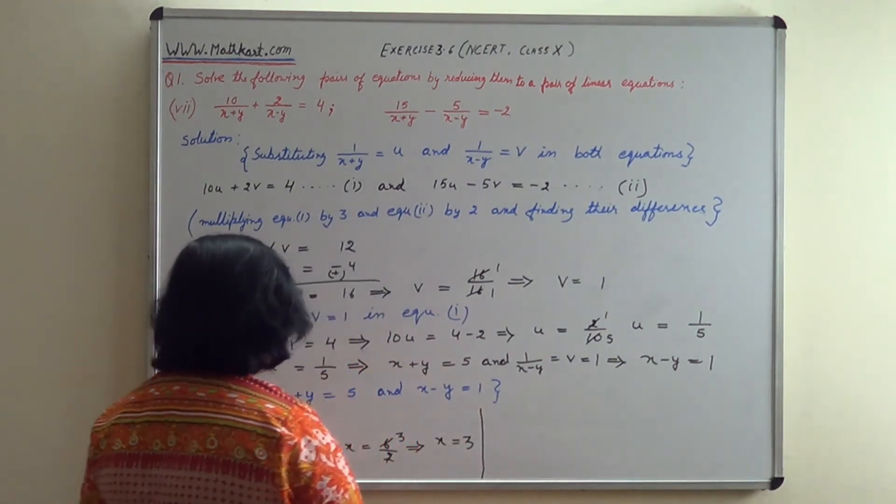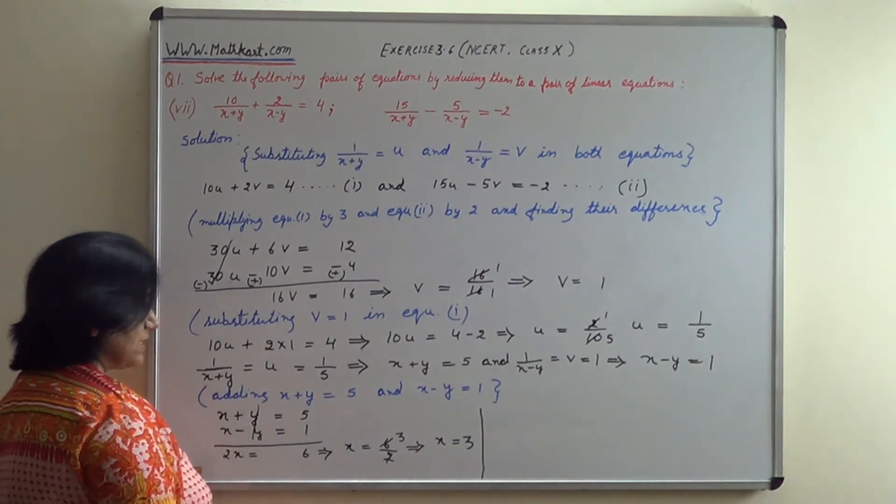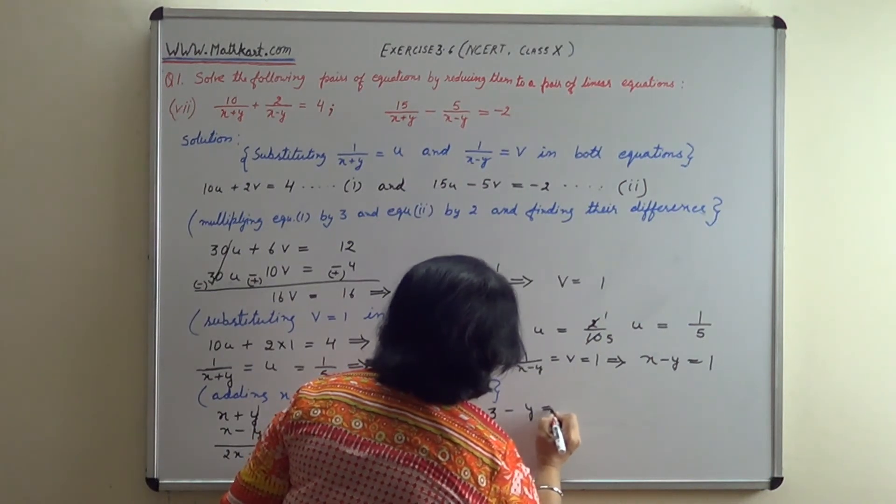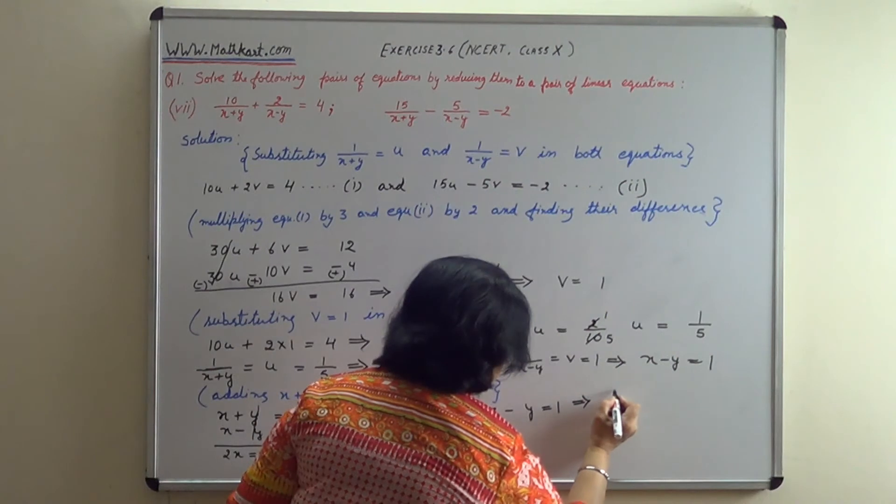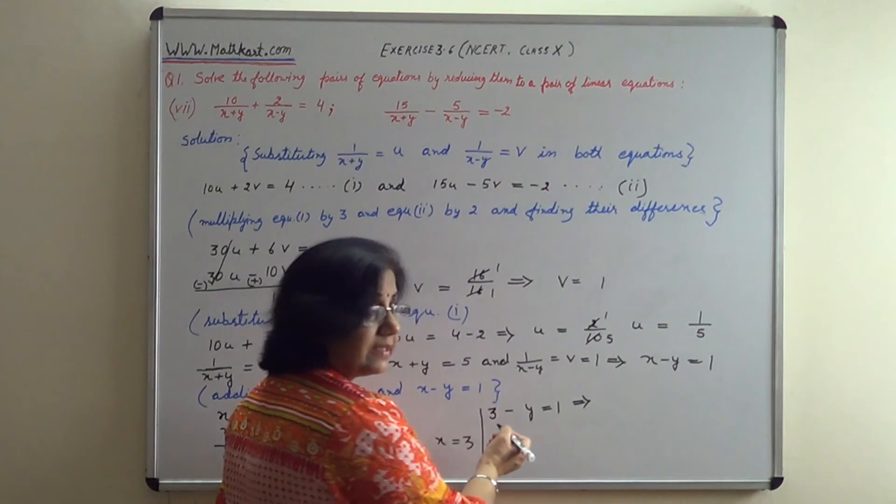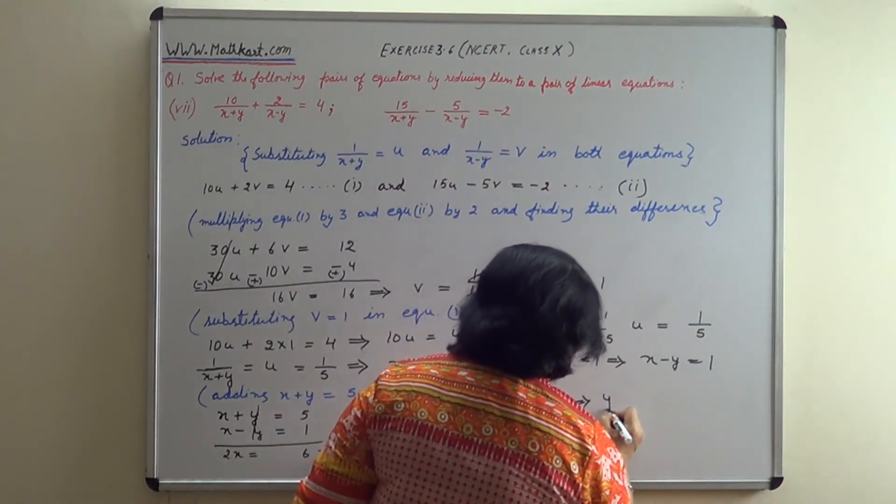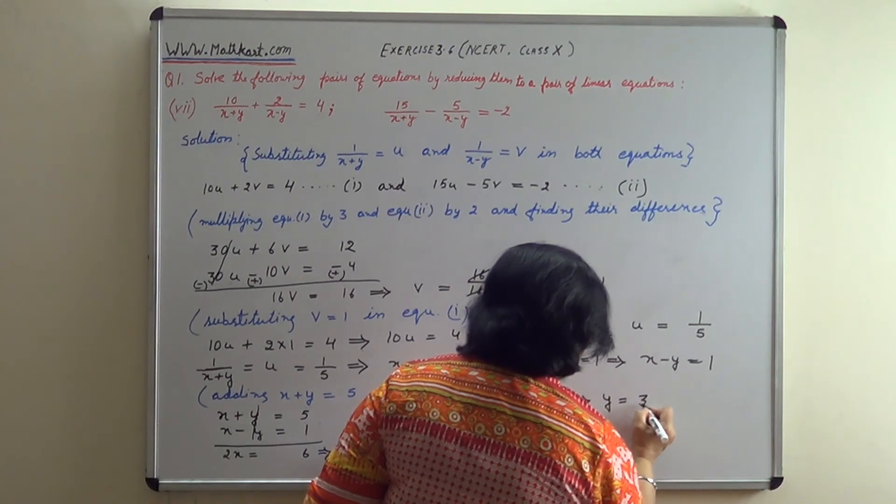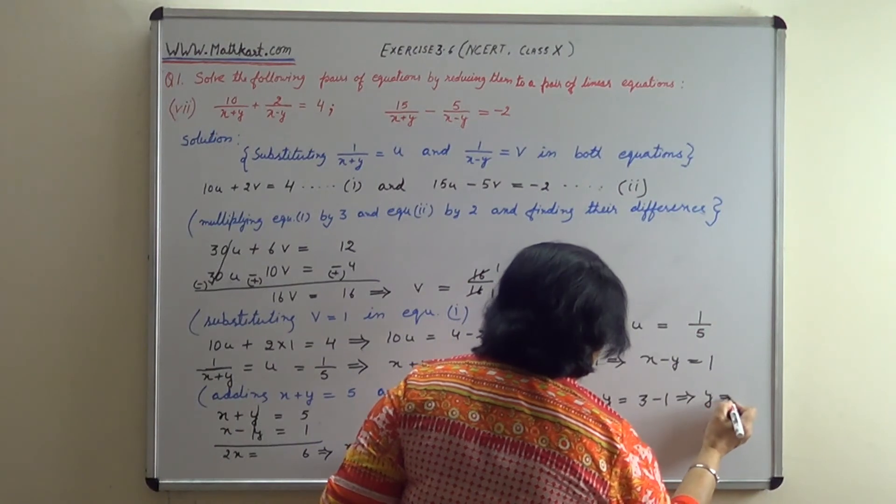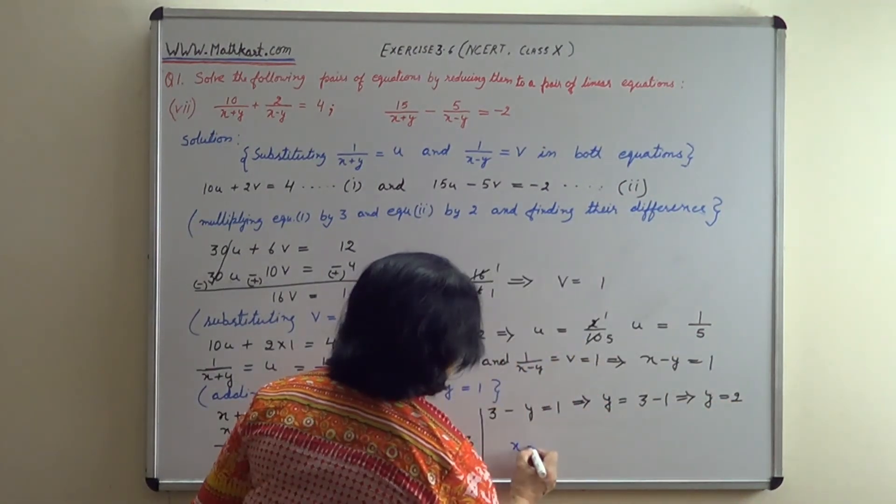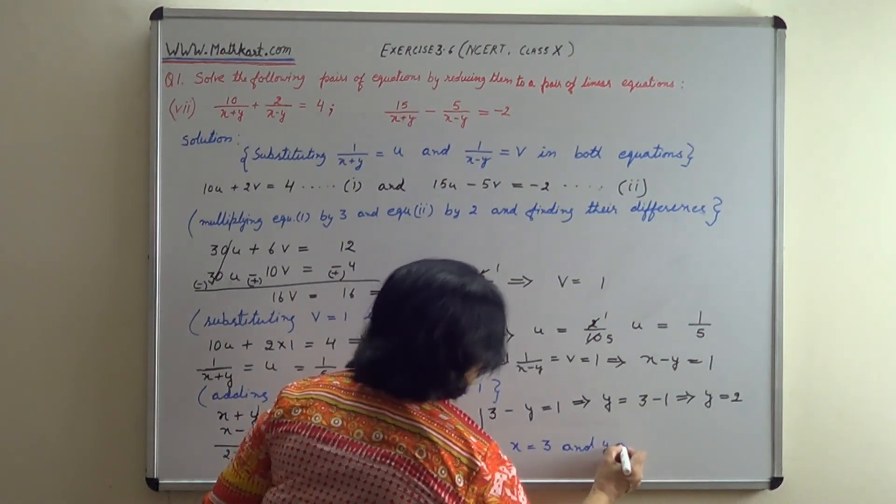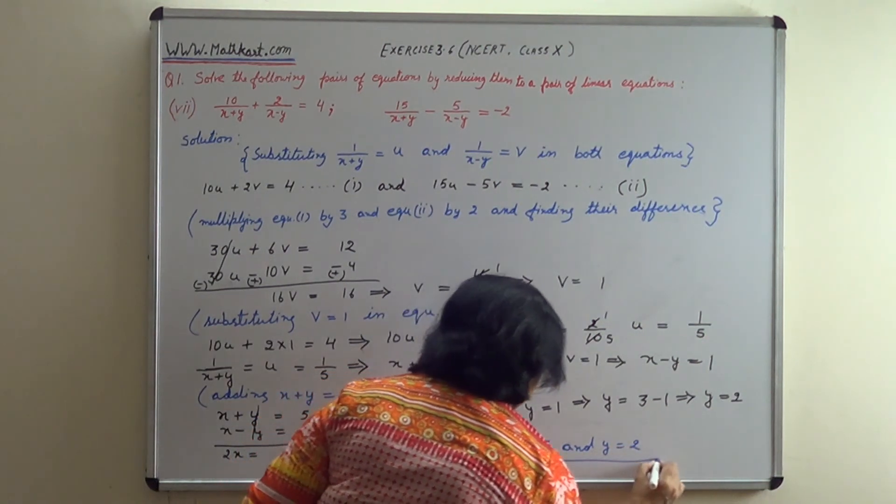Substituting x equals 3 into x minus y equals 1: 3 minus y equals 1, which implies that y equals 2. Therefore, x equals 3 and y equals 2.